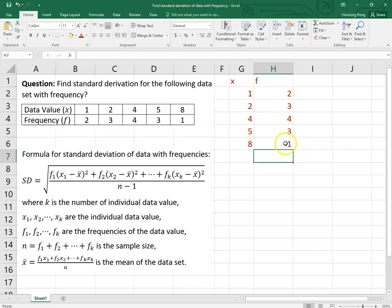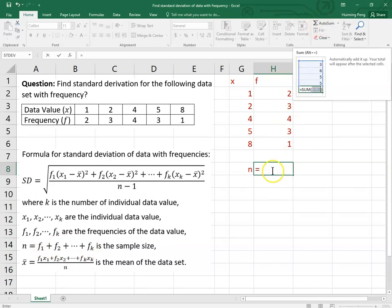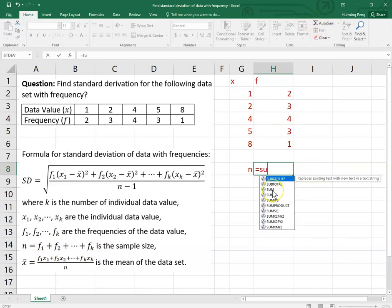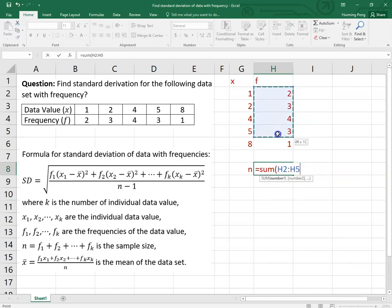Now the first step, we need to find n, the sample size. Let me put n here. So n equals the sum of the frequency, add all these together. You can use AutoSum or use the formula SUM, parentheses, highlight the data, the frequencies, parentheses, which means the sample size is 13.